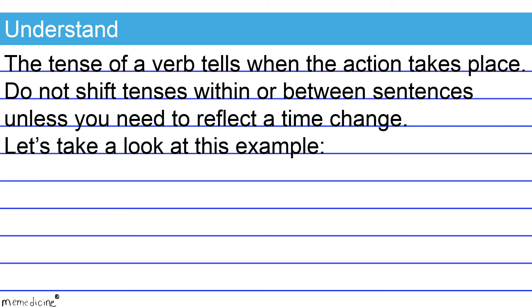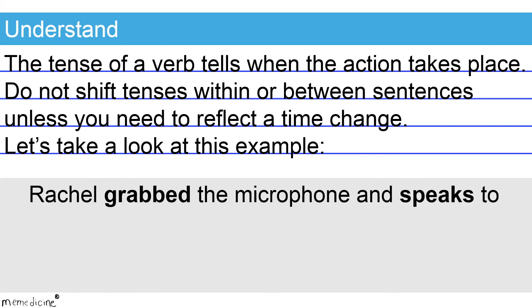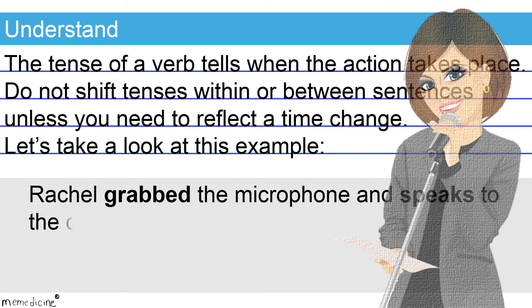Let's take a look at this example. Rachel grabbed the microphone and speaks to the crowd. The featured verb 'grabbed' is written in the simple past verb tense, so we know the speaking also took place in the past. However, the verb 'speaks' is written in the simple present tense. There is no need to reflect a time change. Both verbs should be in the same tense. Shifting the tense of the second verb to its present tense form is incorrect because it creates inconsistency in the overall tense of the sentence.